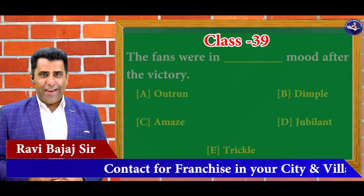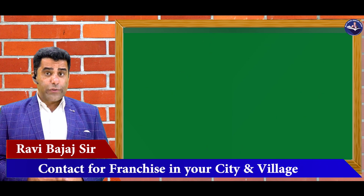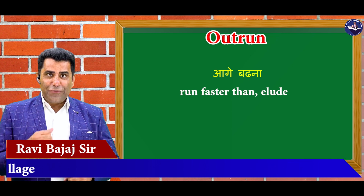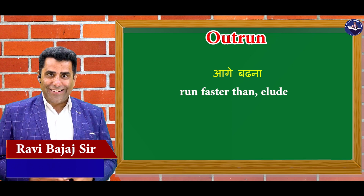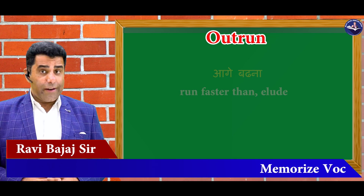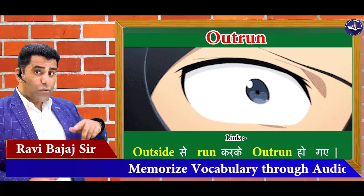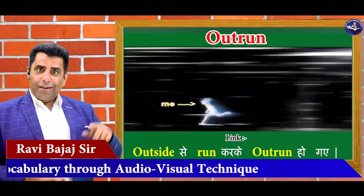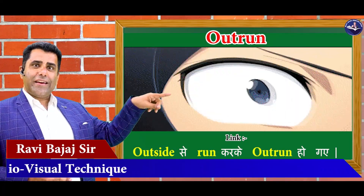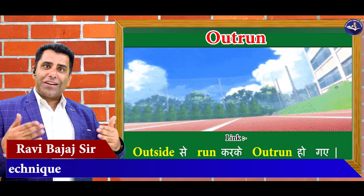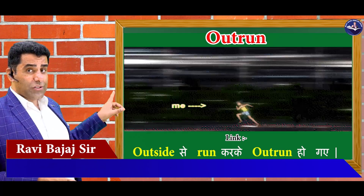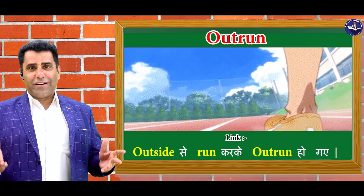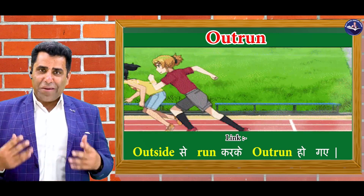Chaliye copy pen tayyaar — and the first word is outrun. Aagye badhna. Elude, run faster than — outrun. And the link is: outside se run karke outrun ho gae, aagye badh gae. Toh 'outside' aur 'run' humara link hai, and outrun humara main word hai, jiska meaning hai aagye badhna.